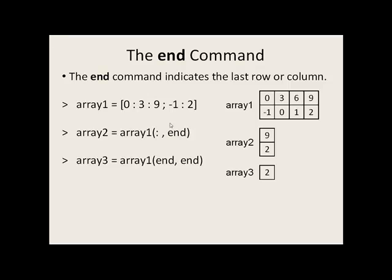The end command indicates the last row or column in an array. Going back to the previous example, if we want all of the rows in the last column, that's 9 and 2, we can say colon, comma, end. If we want the last row, last column element 2, we can say end, comma, end.